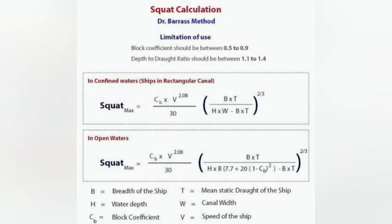Squat effect is approximately proportional to the square of the speed of the ship. Thus, by reducing speed by half, the squat effect is reduced by a factor of 4.